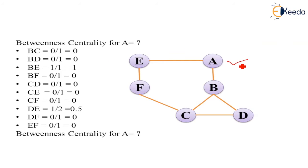Let's consider node A. We will find out the BC. Does A come in between them? No, so we are adding 0 by 1, that is 0. BD, there exists a node. Does A come between them? No, there will be 0.